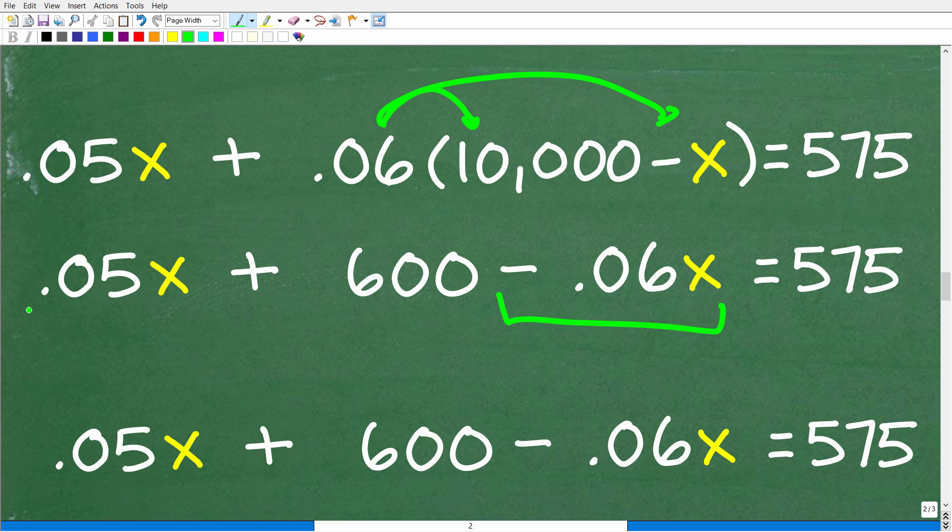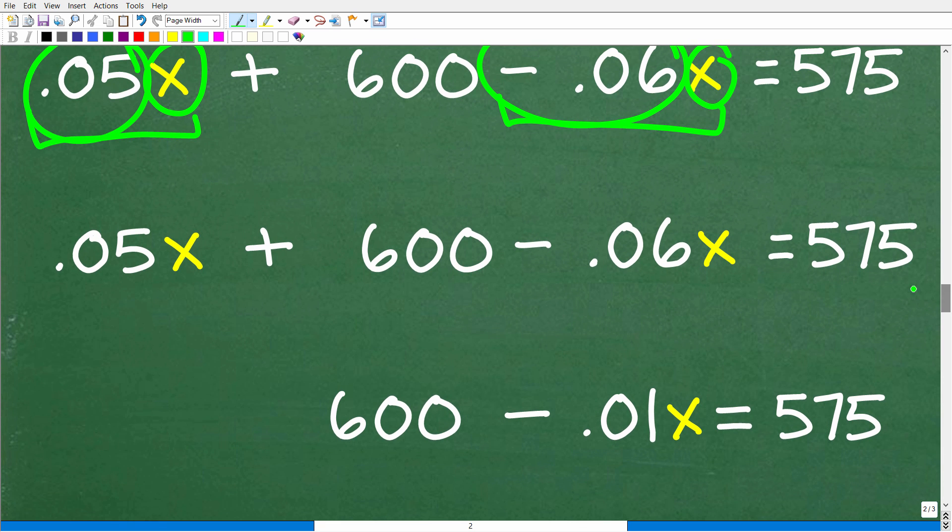Okay, so we have 0.05x plus 600 minus 0.06x. So the next thing we need to do is combine like terms. We have x here and x here. So we're going to add these coefficients. So 0.06, or I'm sorry, 0.05 minus 0.06 gives us what? Well, let me go ahead and show you this. Obviously, I did the work. Okay, so again, we're going to combine like terms. Don't forget about this negative sign. You can kind of think of this as plus negative 0.06, but these two together is going to give us a negative 0.01. So we have 600 minus 0.01x, or 600 plus negative 0.01x is equal to 575.